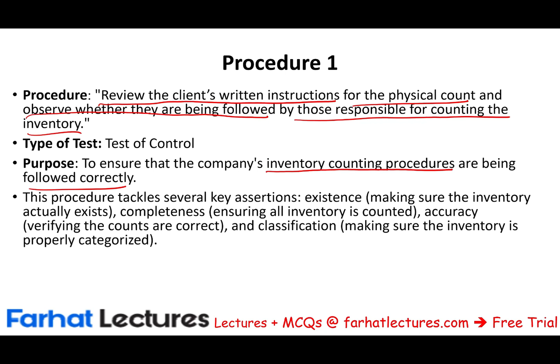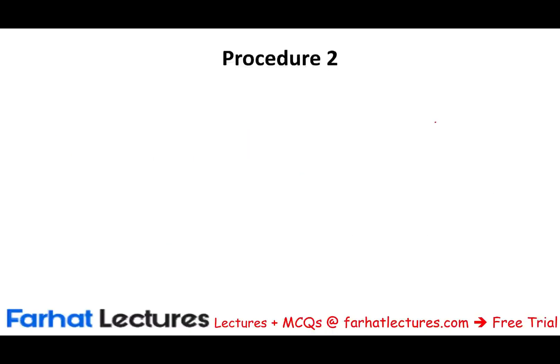This procedure addresses several key assertions. Existence — because if instructions are followed properly, we're making sure the inventory exists. Completeness — because the instructions cover looking for uncounted items and making sure they are counted. And accuracy — because we're counting. In some circumstances, classification is also relevant, whether an item is raw material, work in process, or finished goods. Notice that one procedure can address several key assertions.